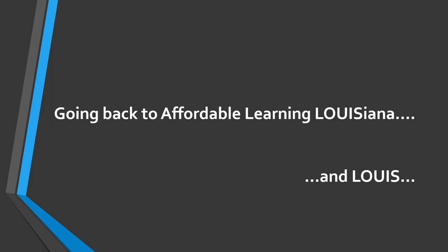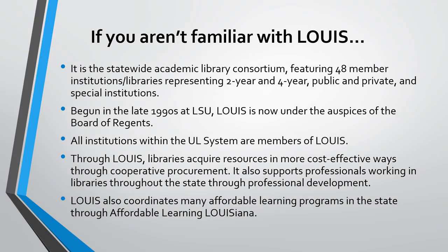Going back to Affordable Learning Louisiana and Lewis — if you aren't familiar with Lewis, it is the statewide academic library consortium featuring 48 member institutions and libraries representing two-year and four-year public and private and special institutions. Begun in the late 1990s at LSU, Lewis is now under the auspices of the Board of Regents. All institutions within the UL system are members of Lewis.